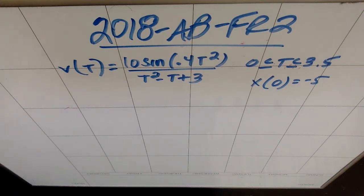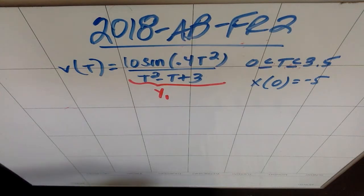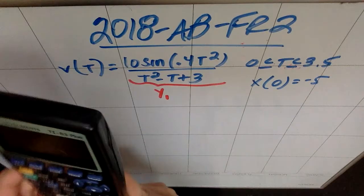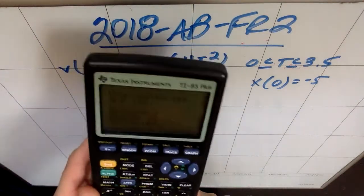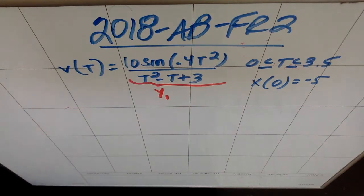First thing you're going to do, because this is a calculator problem, is put this guy in as y1, and you're going to use x for your t's. I'm going to put that in as y1. Fair warning, my calculator is low on batteries, which is not a thing you should ever let your calculator do, but here we are.